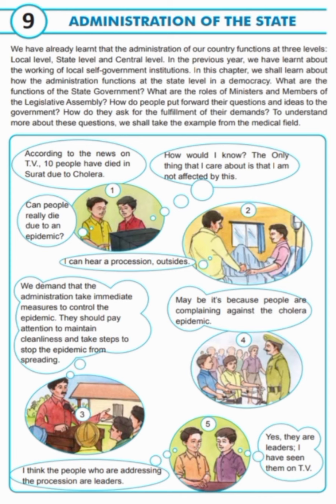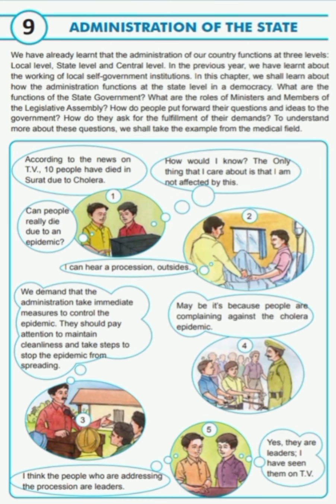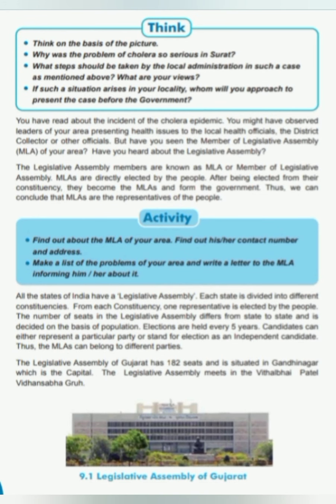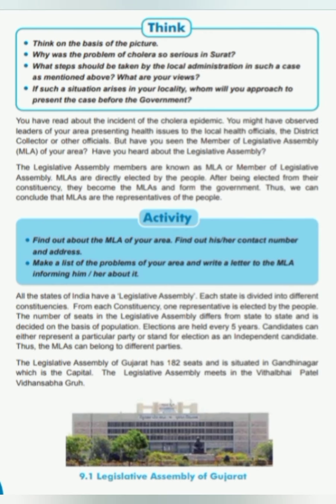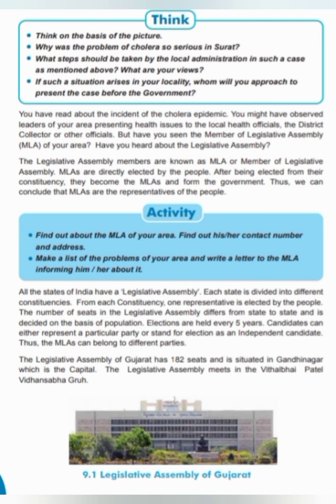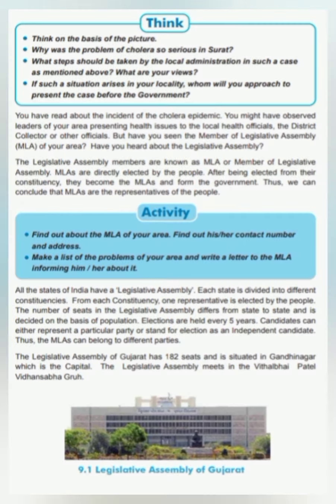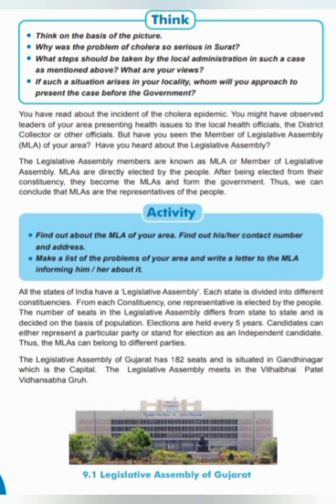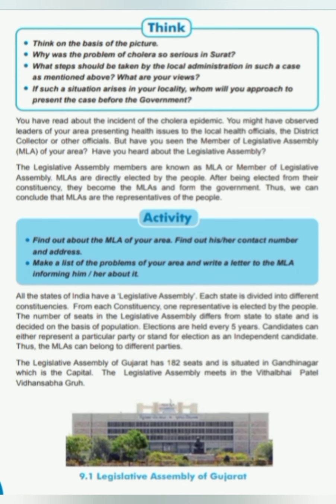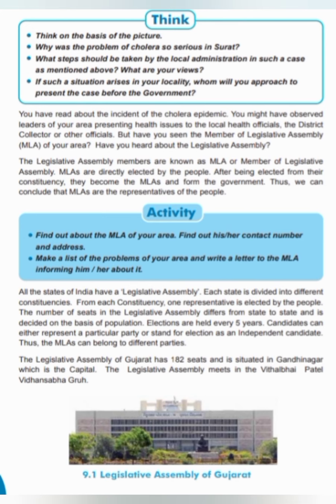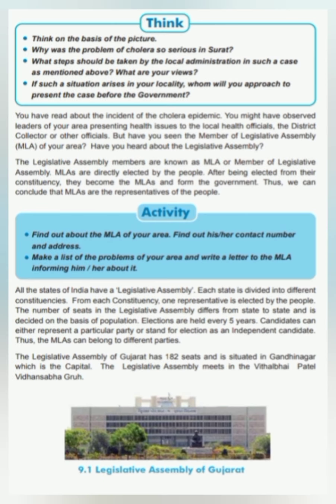Let's solve the think box on page number 46. Why was the problem of cholera so serious in Surat? The epidemic of cholera that broke out in Surat was very serious because almost 10 people had died of it. What steps should be taken by the local administration in such a case? The local administration should take serious steps. Immediate medical services should be rendered to maintain public health and not to allow the epidemic to spread further. Dirty water puddles should be removed, and garbage heaps should be cleaned off urgently.